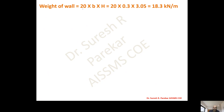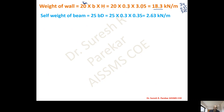Weight of wall: unit weight of masonry is 20 kN/m³. Wall height = floor-to-floor height minus beam depth = 3.4 − 0.35 = 3.05 m. Wall load = 20 × 0.3 × 3.05 = 18.3 kN/m. Self weight of beam = 25 × b × d = 25 × 0.3 × 0.35 = 2.63 kN/m.